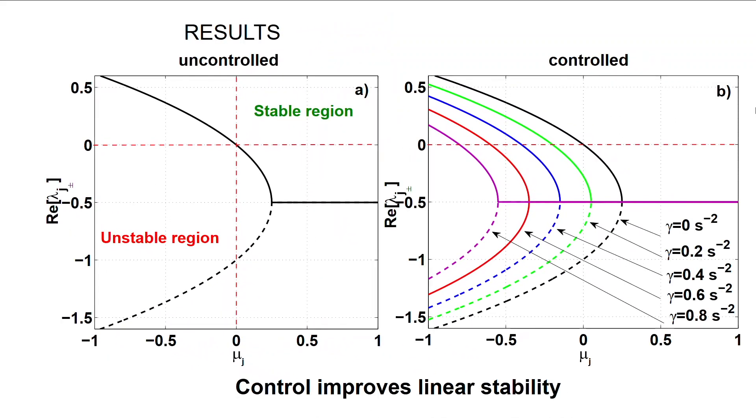When adding secondary control, the stable region grows, so that overall the stability is improved.